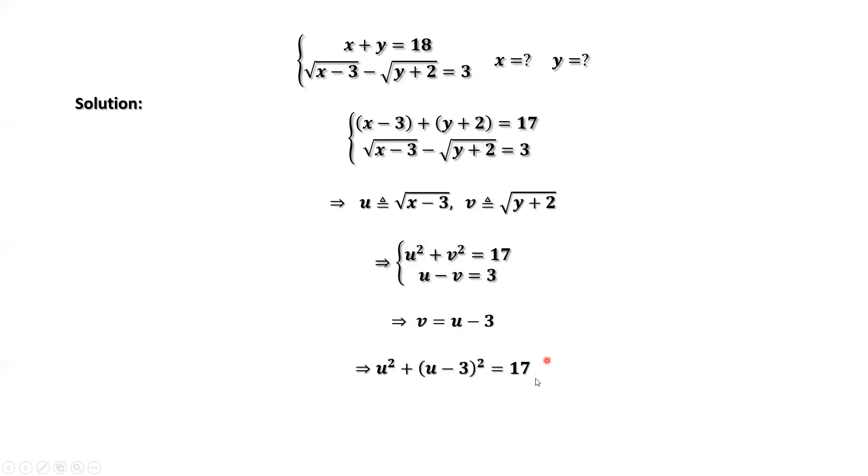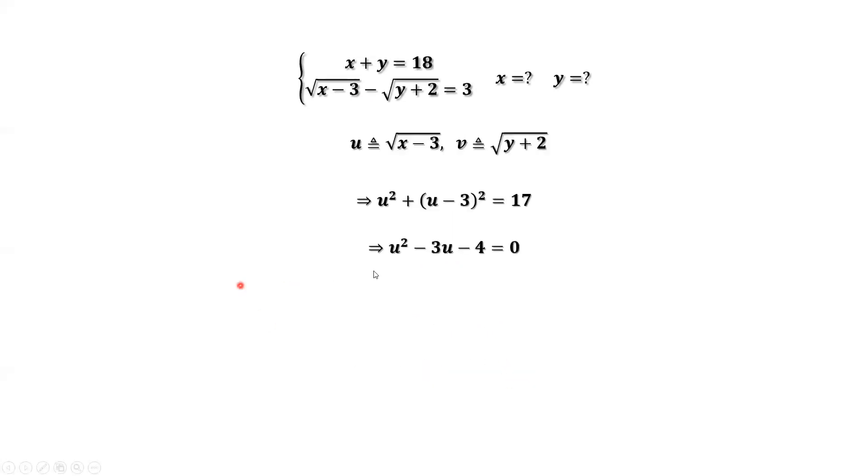This is an equation about u only. We have u squared minus 3u minus 4 equals 0. We can use the quadratic formula to find the roots of this quadratic equation, or you can factor this.